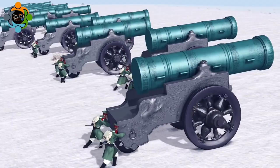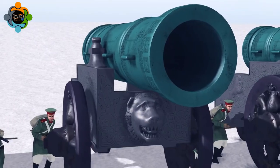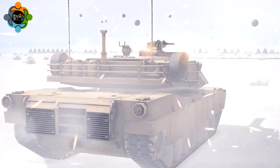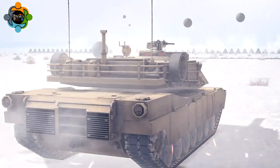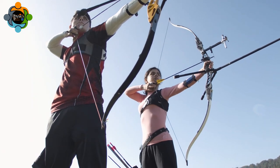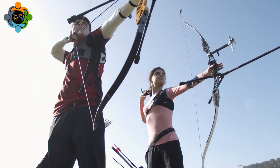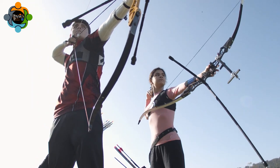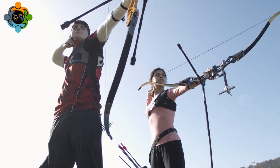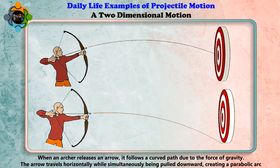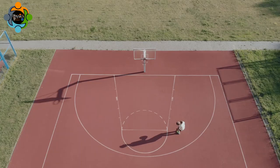Imagine a cannon firing a cannonball — the cannonball follows a projectile trajectory, reaching a certain height before descending towards its target. Archers also utilize projectile motion: when an archer releases an arrow, it follows a curved path due to gravity, traveling horizontally while simultaneously being pulled downwards, creating a parabolic arc.